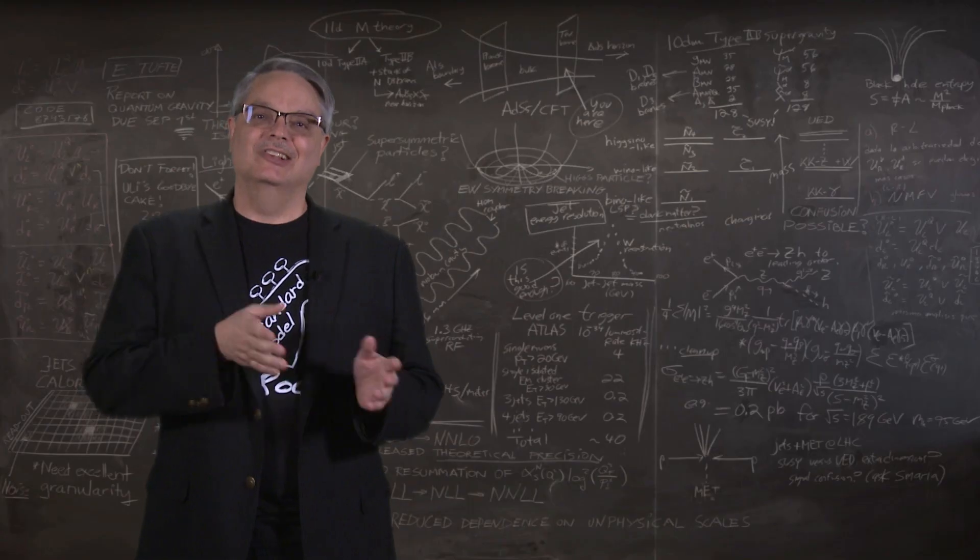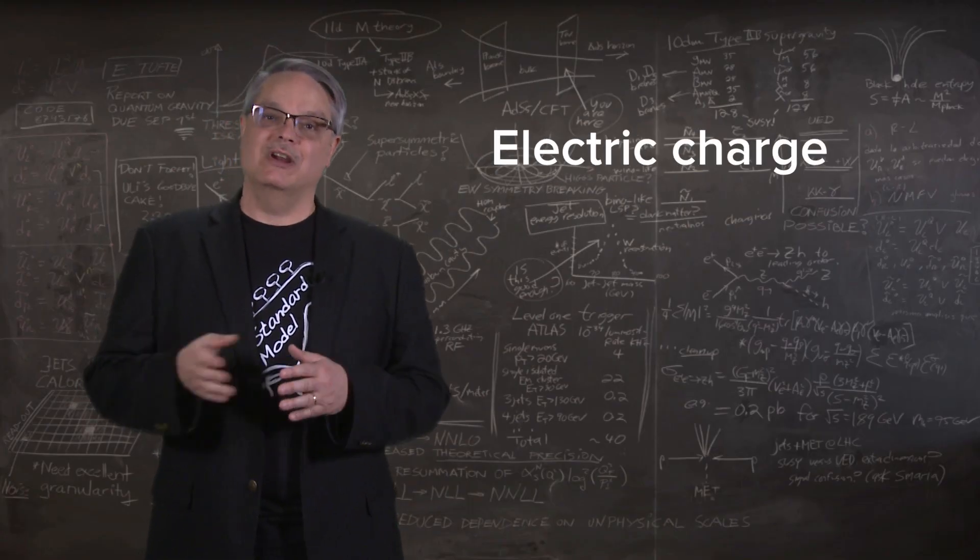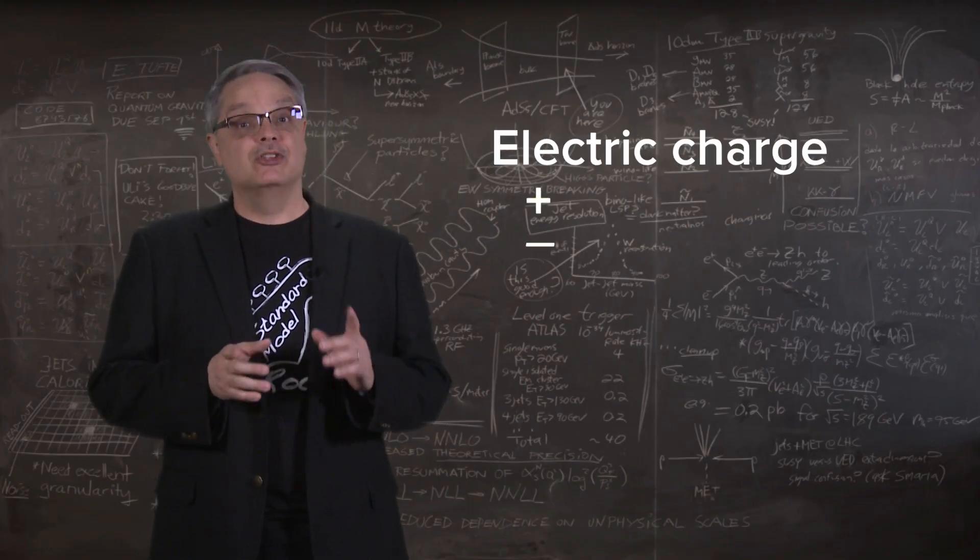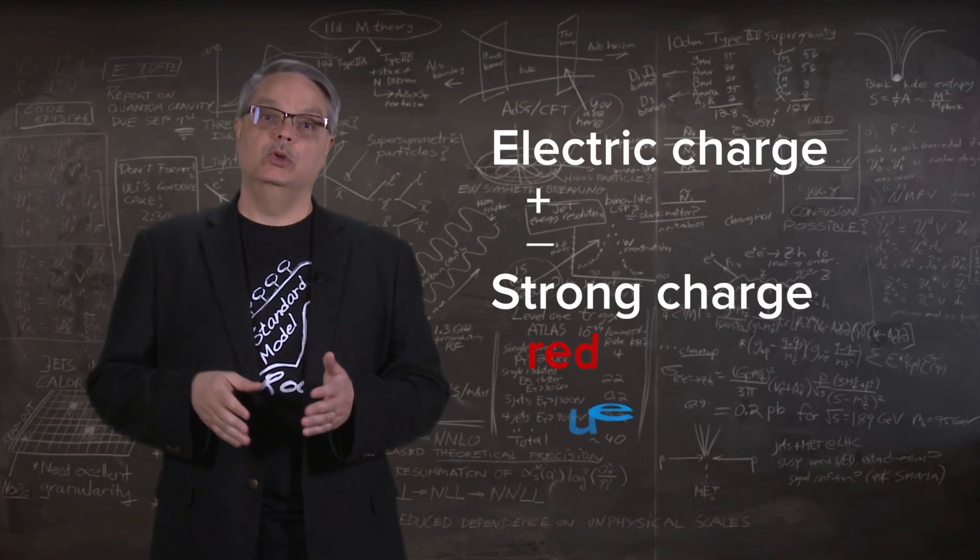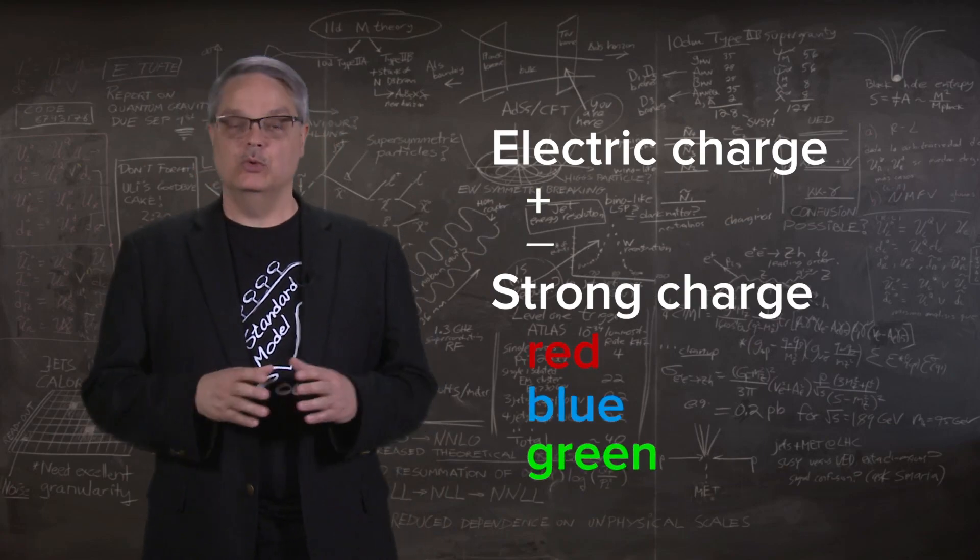In any event, unlike electric charge, which comes in two varieties, plus and minus, the strong charge comes in three varieties named red, blue, and green. Again, nothing to do with regular color.